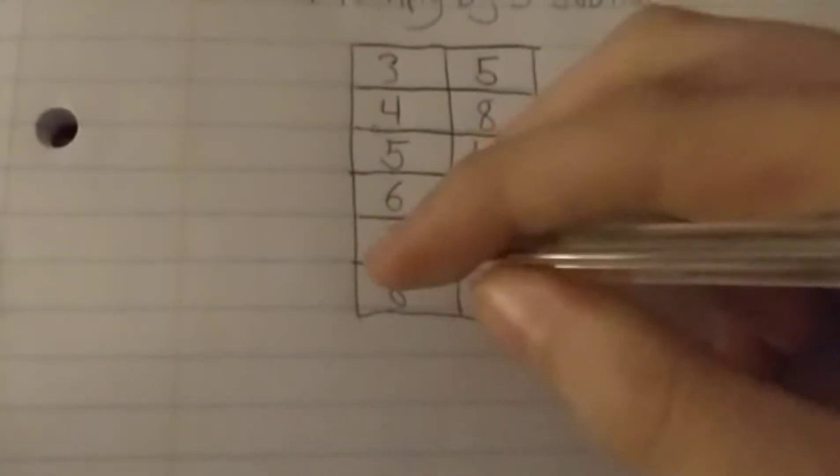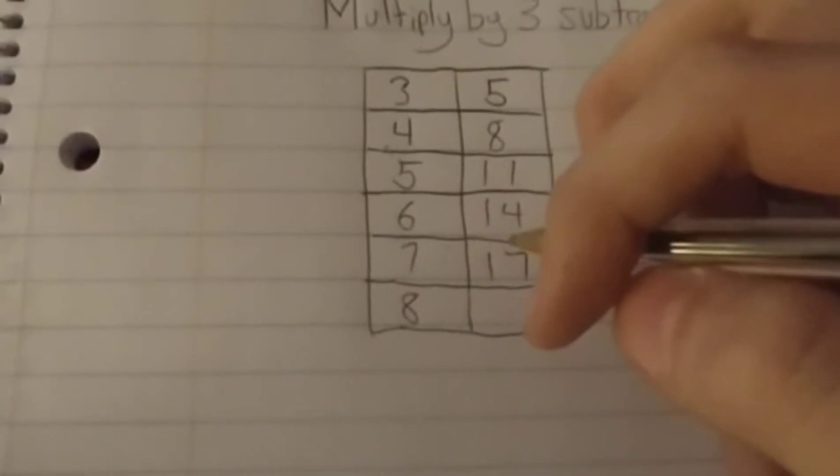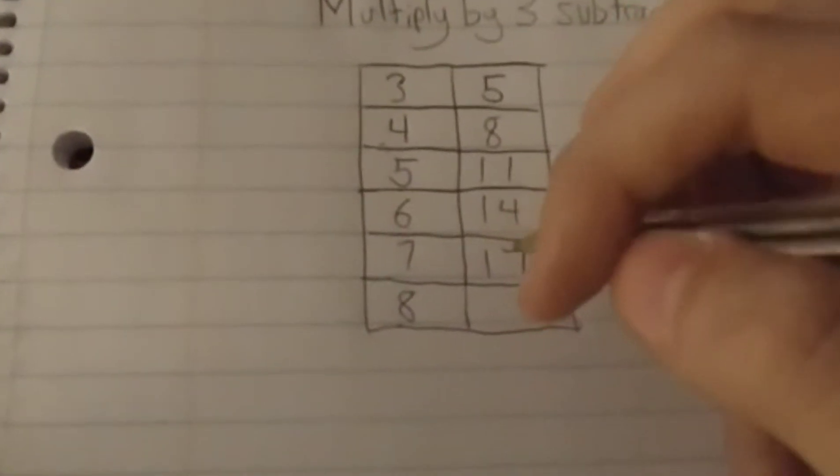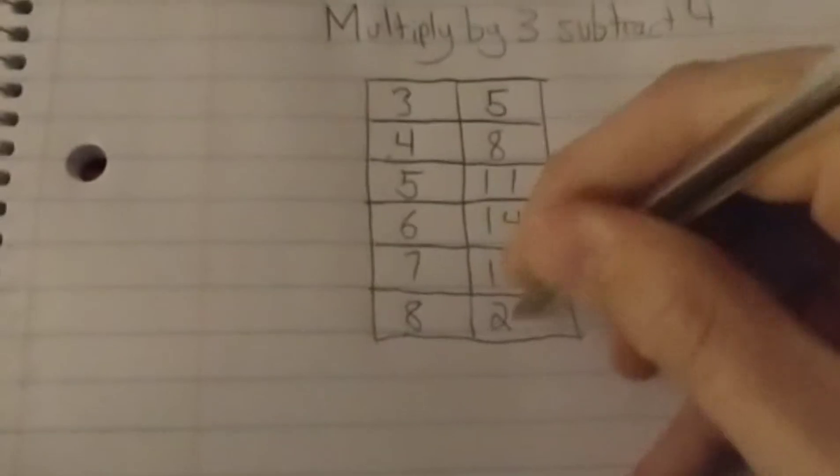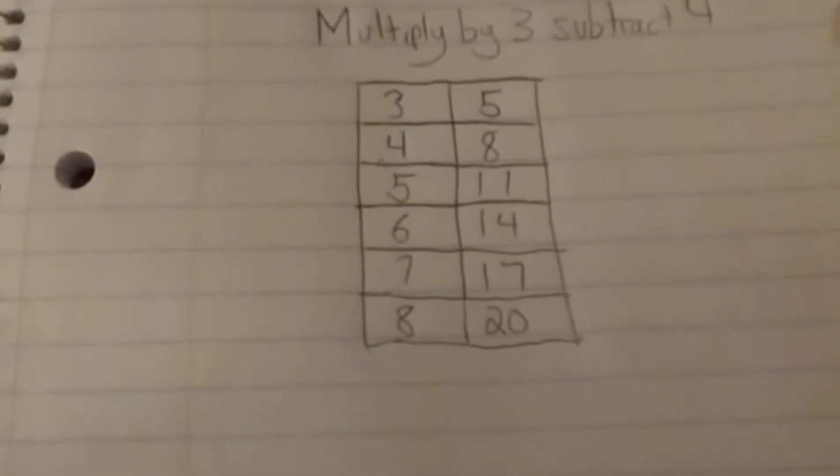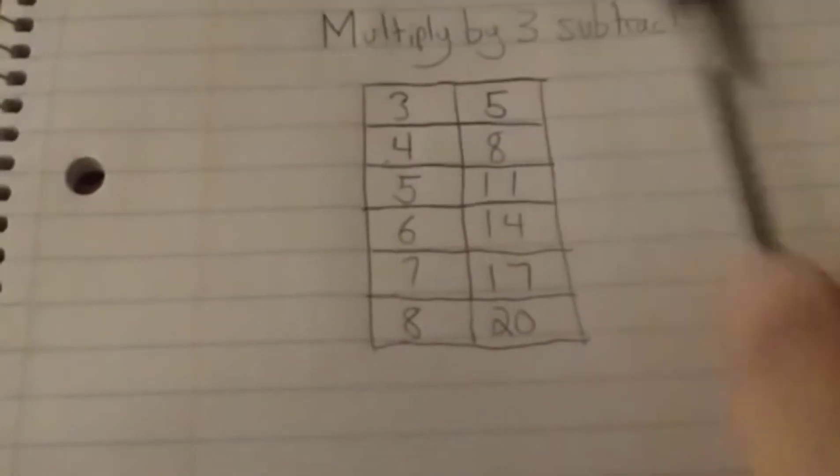Same thing with 8. 8 times 3 is 24, minus 4 is 20. And that's the basic definition for a formula.